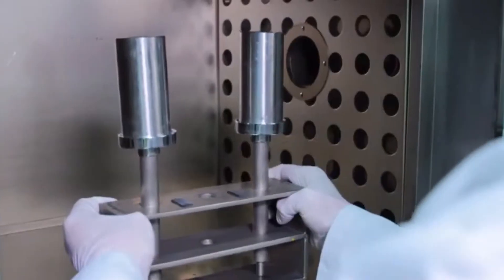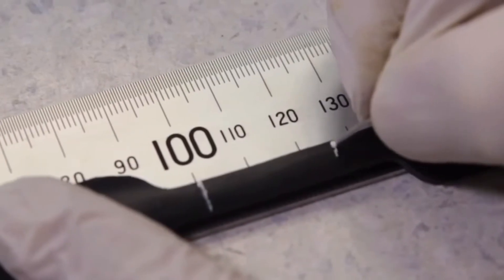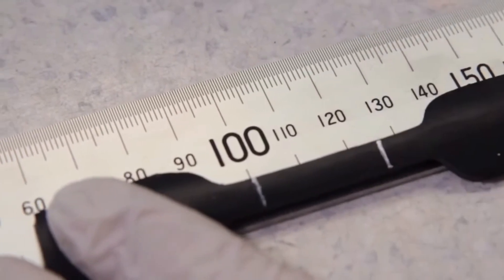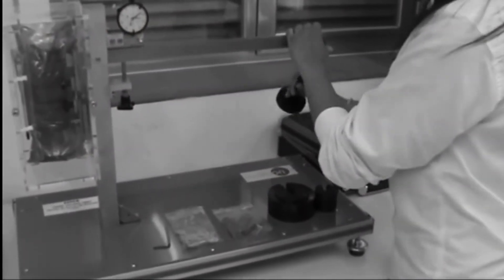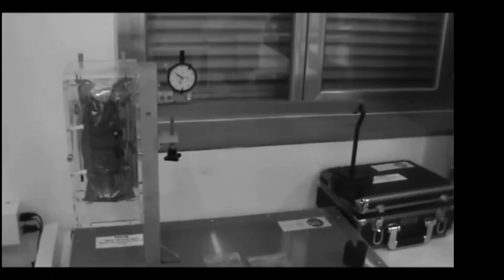General procedure for creep testing: The unloaded specimen is first heated to the required temperature and the gauge length is measured. The predetermined load is applied quickly without shock. Measurement of the extension are observed at frequent intervals. Average of about 50 readings should be taken.